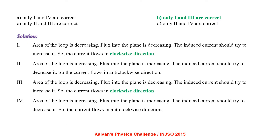In the second case, the area of the loop is increasing, so flux into the plane is increasing. The induced current should try to decrease it, so current flows in anti-clockwise direction. In the third case, area of the loop is decreasing, flux into the plane is decreasing, so the induced current tries to increase it, and current flows in clockwise direction. In the final case, area is increasing and flux into the plane is increasing, so induced current flows in anti-clockwise direction. So the correct option is B.